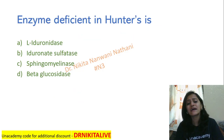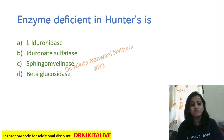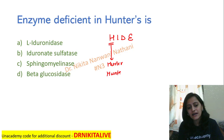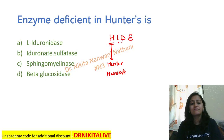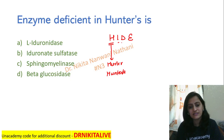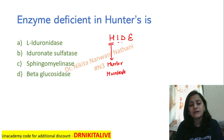What is the enzyme deficient in Hunter's? For Hurler's and Hunter's, the MPS trick to remember is HIDE. H stands for Hurler's and Hunter's. ID means something related to iduronic acid — the enzyme is either L-iduronidase or iduronate sulfatase. And they have accumulation of heparin sulfate and dermatan sulfate.